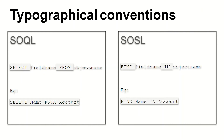Regarding syntax conventions: for SOQL, the format is SELECT [field name] FROM [object name], and you can add a WHERE clause to filter results. For example, SELECT Name FROM Account returns all account names in the org. For SOSL, the format is FIND [keyword] IN [field] [object name]. For example, FIND Name IN Account searches for 'Name' in the Account object.